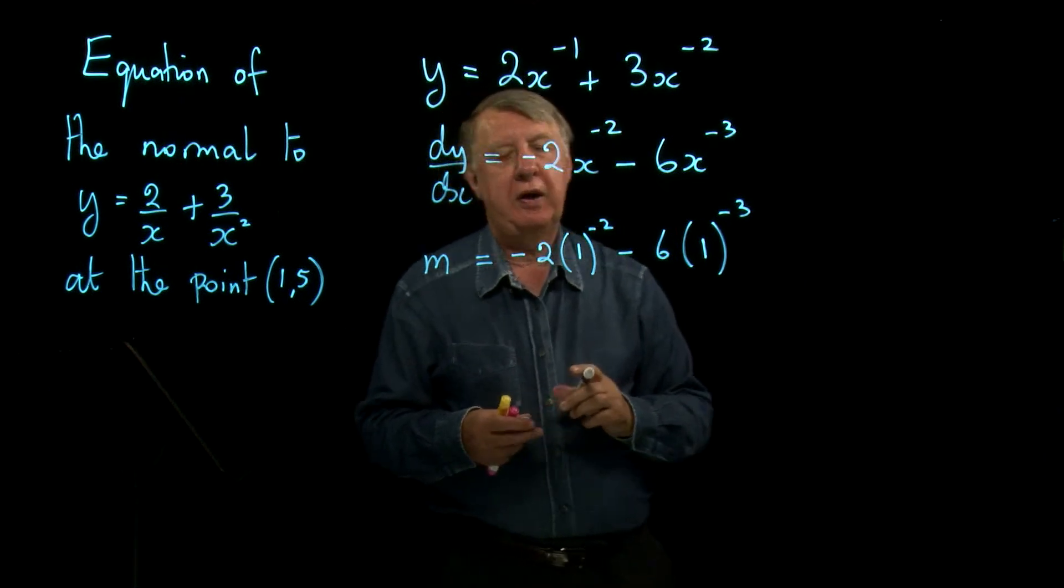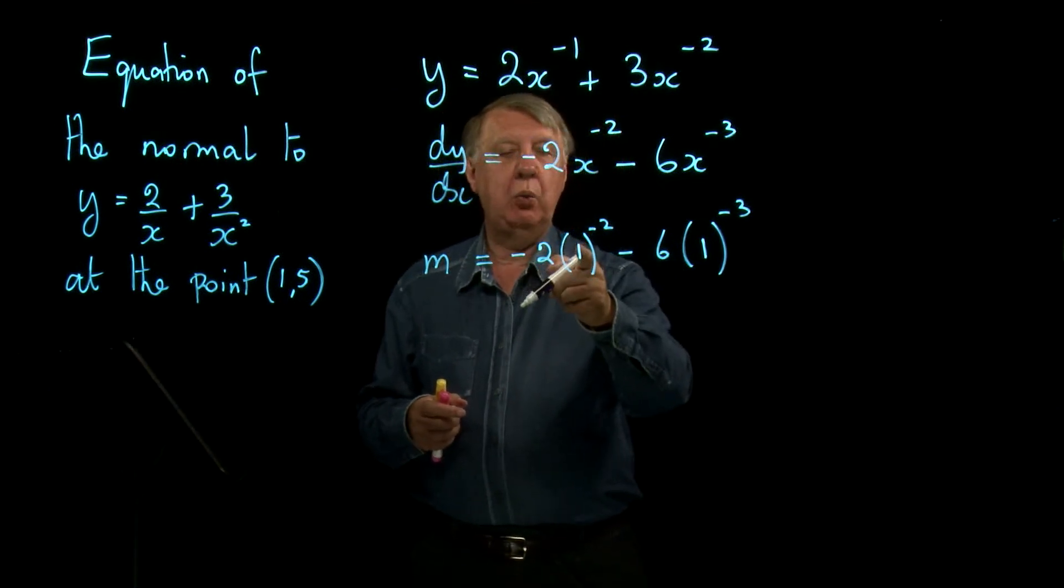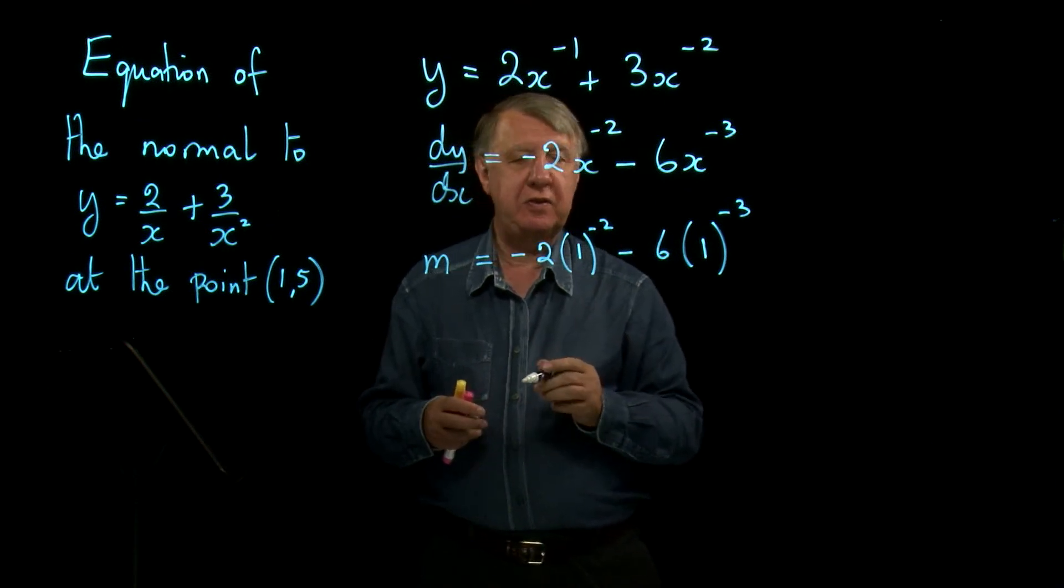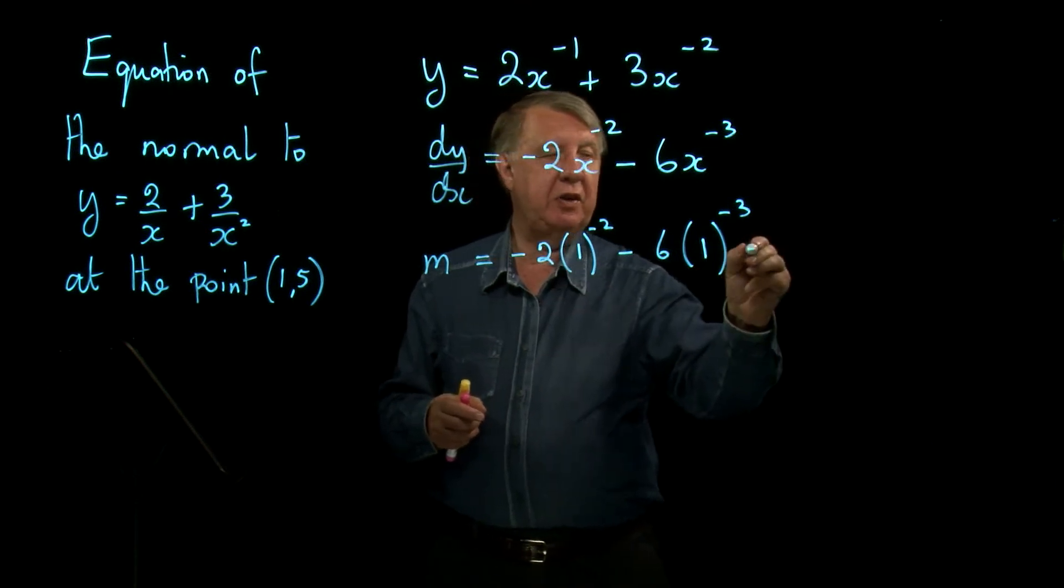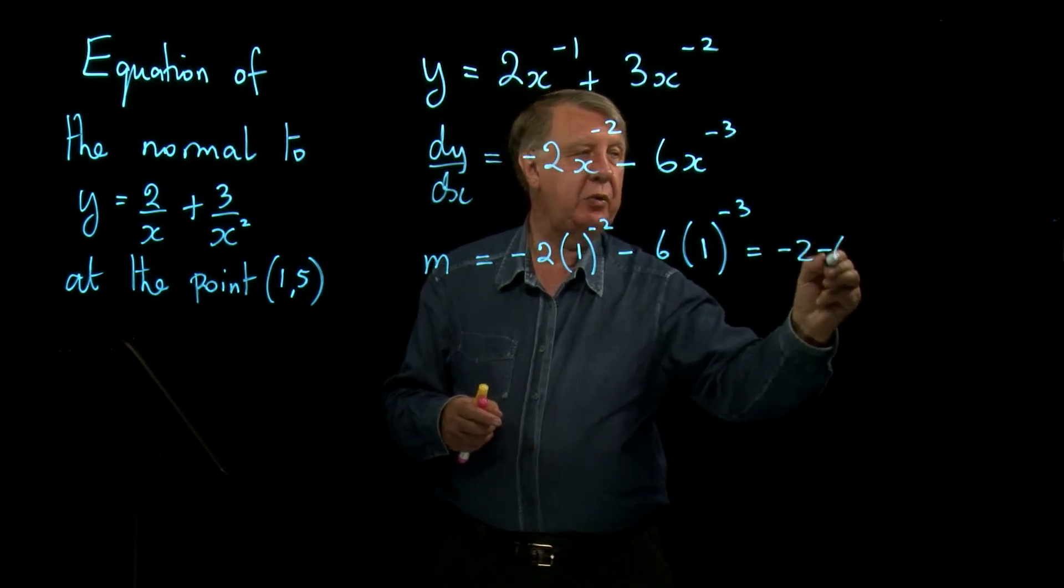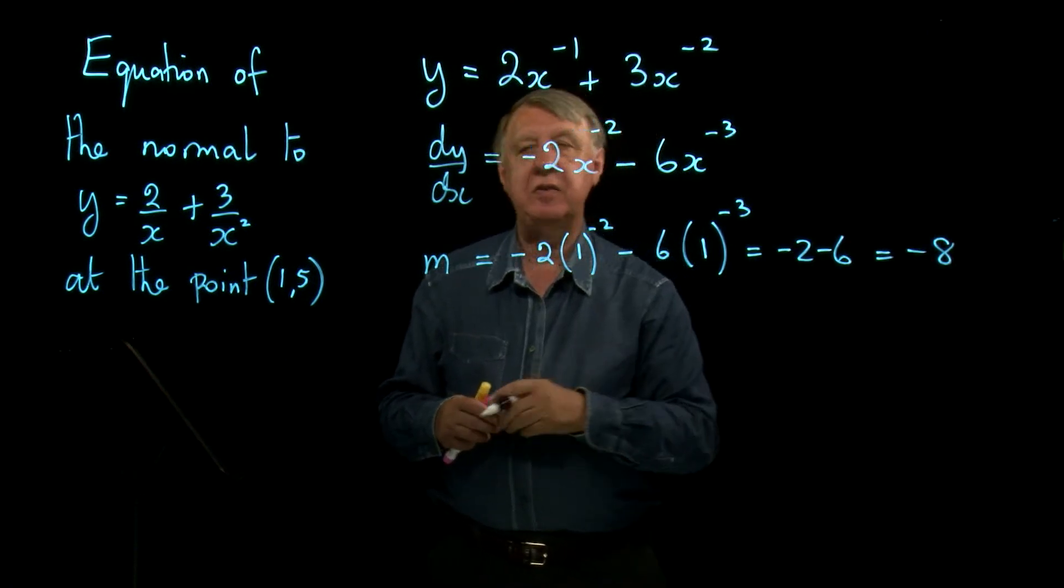And of course, 1 to any power is still 1, so that's nice and easy, isn't it? So this is literally negative 2, take away 6, which is negative 8.